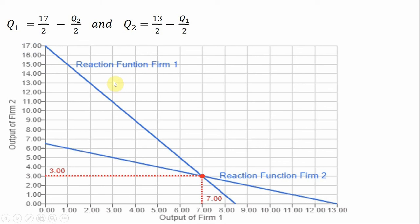So let's go ahead and graph Firm 1's reaction function. So what I'll do is I'm going to try to find these vertical intercepts and horizontal intercepts. Where does the reaction function touch the vertical axis? Where does it touch the horizontal axis?